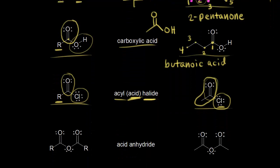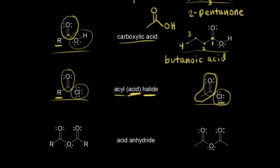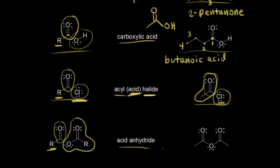Our next functional group is an acid anhydride. Here is our carbonyl with the R group, and instead of a chlorine we have another acyl group on the right. So this is an acid anhydride, also a carboxylic acid derivative — you can form an acid anhydride from a carboxylic acid. The example here is acetic anhydride.